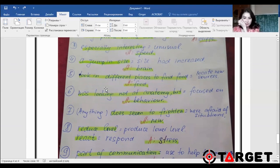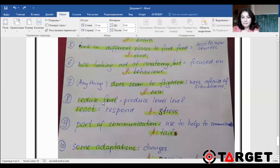Number five, look in different places to find food. In the question, it was locate new sources. In the track, it was look in different places to find food. This is the paraphrase again. And the answer is food. Next, number six, in the audio it was looking not at anatomy, but behavior. And in the question was focused on. So they were looking at behavior. Focus, looking, they are close synonyms.